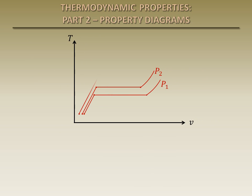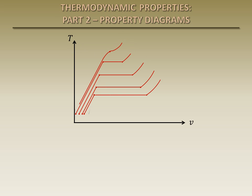As the pressure is further increased, the saturation line continues to shrink until the saturated liquid and saturated vapor states are identical. This is called the critical point, and the pressure and temperature at which this occurs are called the critical pressure and critical temperature. At pressures above the critical pressure, there is no distinct phase change. A line can be drawn through the saturated liquid and saturated vapor states, forming a dome which separates the different regions of the property diagram.